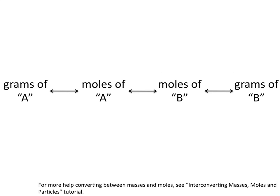But what happens if we want to go to or from grams? The coefficients in a balanced chemical equation relate moles of one product or reactant to moles of another, and the moles are related by their stoichiometric coefficients. We can go from grams of a reactant or product to moles of that same reactant or product using the formula weight. This creates a pathway of converting grams to moles using the formula weight, then using the stoichiometric coefficients to go from moles of one reactant or product to moles of a different one, and then using the formula weight to go from moles back to grams.